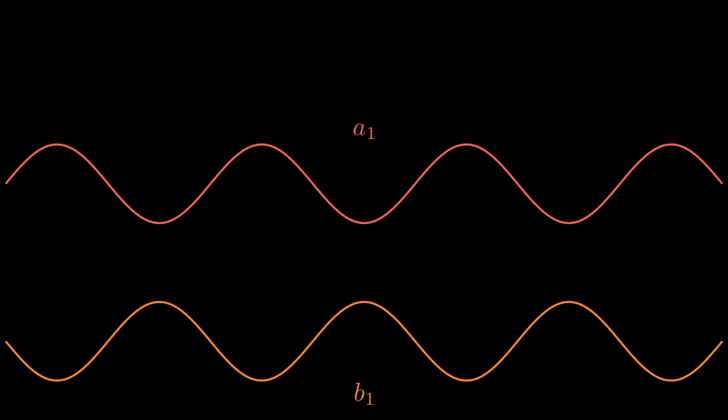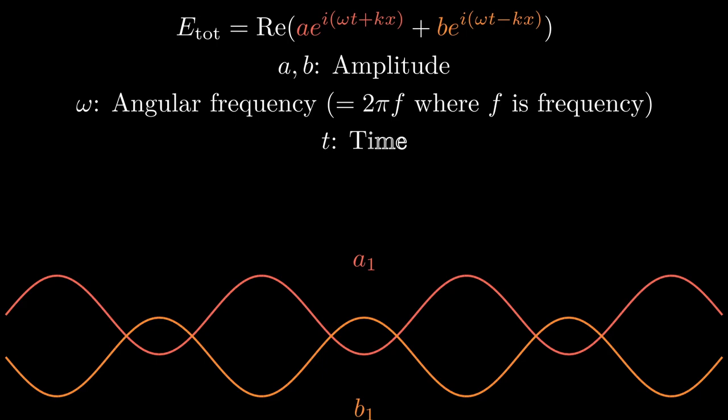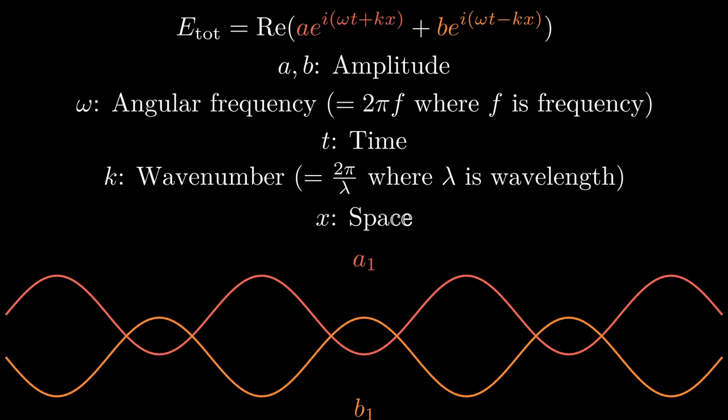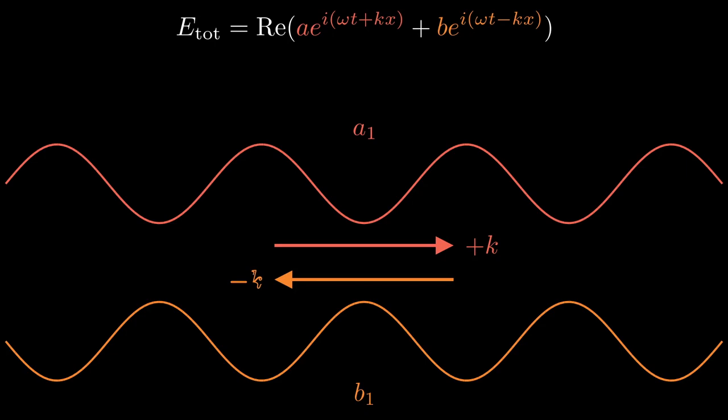The total electric field is the sum of both beams, where a and b are the amplitude, omega is the angular frequency, t is time, k is the wavenumber related to the wavelength, and x is space. The wavenumber k is used to indicate the direction that the wave is traveling.